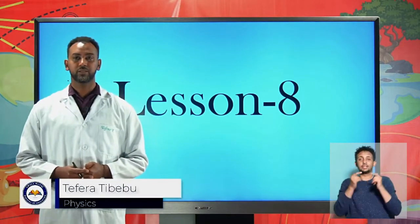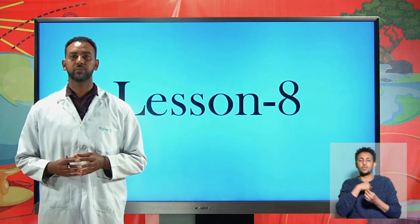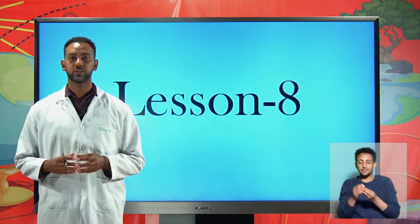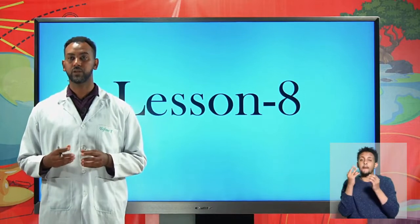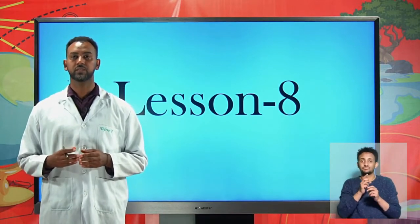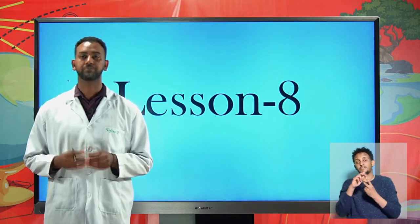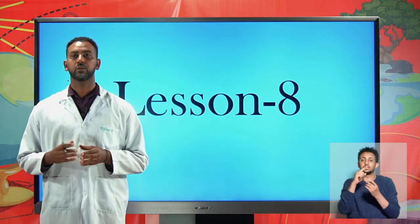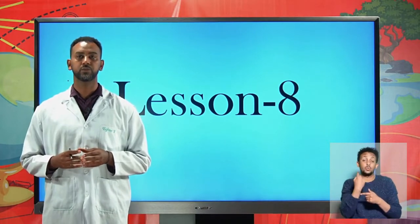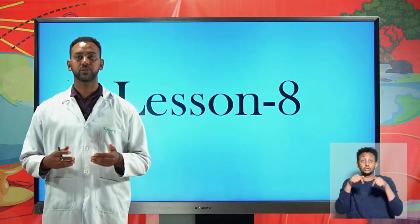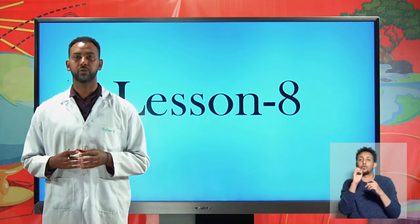Previously we tried to discuss linear momentum. We defined what momentum is — momentum is a property of a massive body to exert force on any obstacles along its motion. We mathematically expressed momentum as mass times velocity v. Since velocity is a vector quantity and mass is a scalar quantity, momentum is also a vector quantity. Momentum has a unit of kilogram meter per second, or equivalently Newton second. Today we will proceed from that and try to see the different types of impacts of linear momentum and the types of momentum.